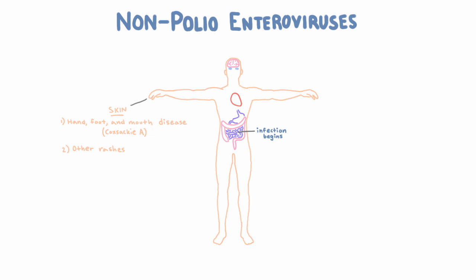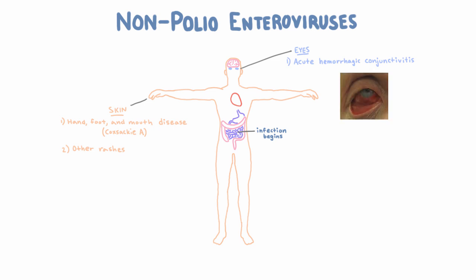The next spot that enteroviruses can go are the eyes, where they can cause acute hemorrhagic conjunctivitis. The virus infects the conjunctivae, which are the mucous membranes lining the eye, and it can cause bleeding underneath those, which causes pain and makes your eyes look blood red. Usually this heals on its own and doesn't cause vision loss or permanent damage.